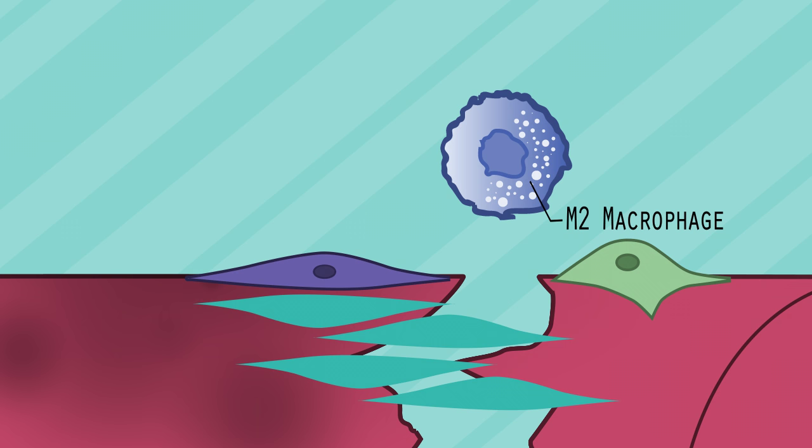These macrophages then decrease, likely giving rise to M2-type macrophages, which stimulate satellite cell differentiation and support the survival of remaining FAPs.